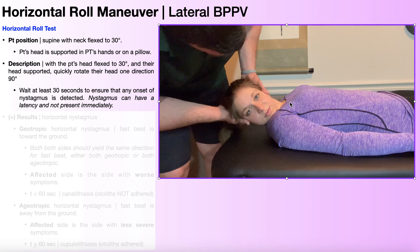If you have recording goggles on the patient, you can watch the computer screen. If you don't have recording goggles, you'll have to look directly into the patient's eyes — they'll need to keep their eyes open, preferably fixed on some object in front of them so their eyes aren't moving around and you can accurately observe for nystagmus. Remember that nystagmus can have a latency anywhere between about 2 and 10 seconds, though it's normally on the shorter end, usually around 2 to 5 seconds. You need to observe the patient's eyes for at least 30 seconds to ensure you catch any nystagmus.